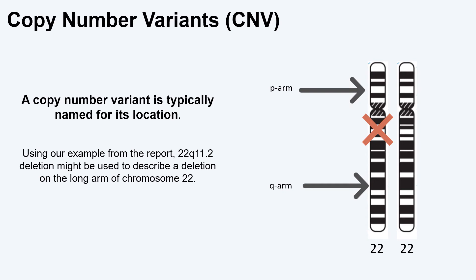You may see the term p-arm and q-arm on this slide with an arrow pointing to the chromosomes. Each chromosome usually has two sections with a divider between them, called the p-arm and the q-arm. P stands for petite because it is the smaller of the two sections, and q stands for queue, meaning tail, and is the longer section of the chromosome. Using our example report, the 22q11.2 deletion is named after the specific part of chromosome 22 that is missing — a piece of the long arm or q-arm has been deleted.